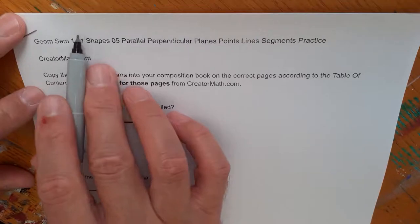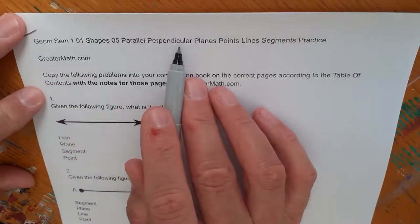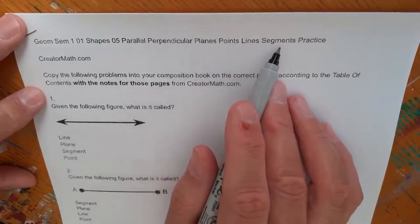This is Geometry semester one, unit number one, Shapes. This is the fifth lesson called Parallel Perpendicular Planes, Points, Lines, Segments Practice.